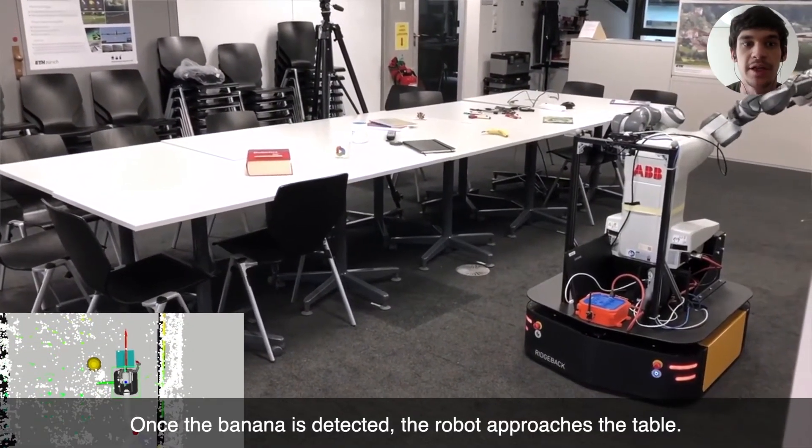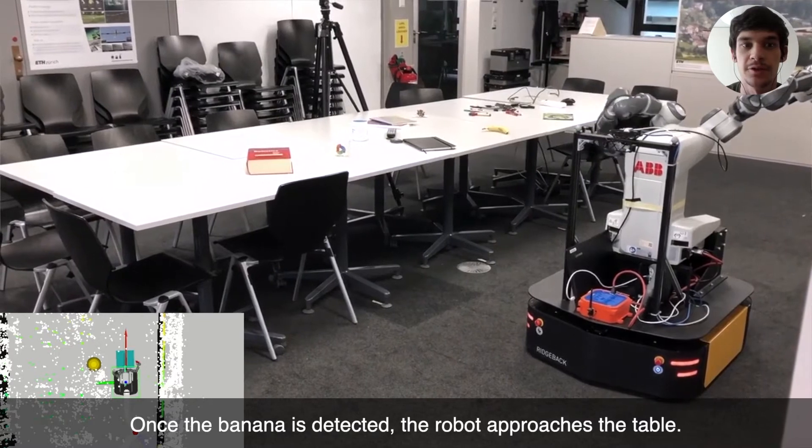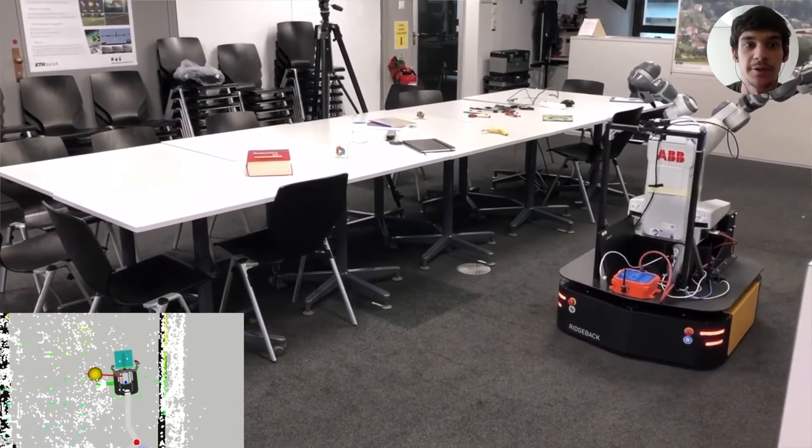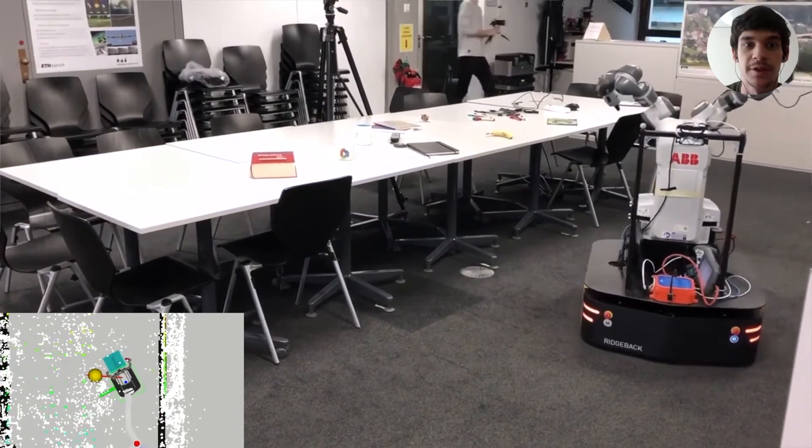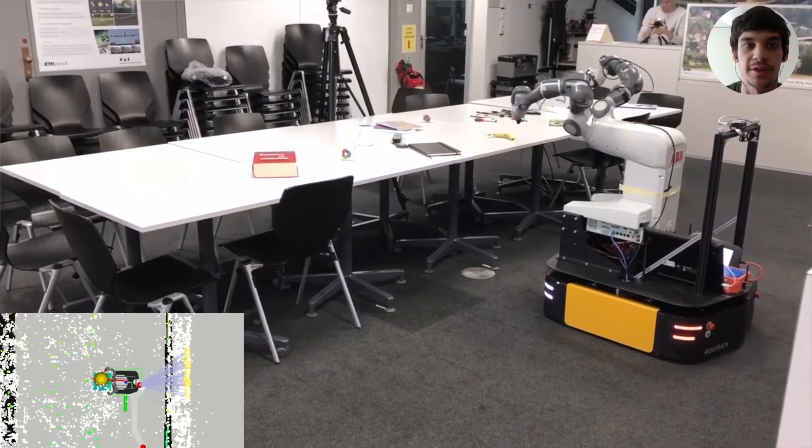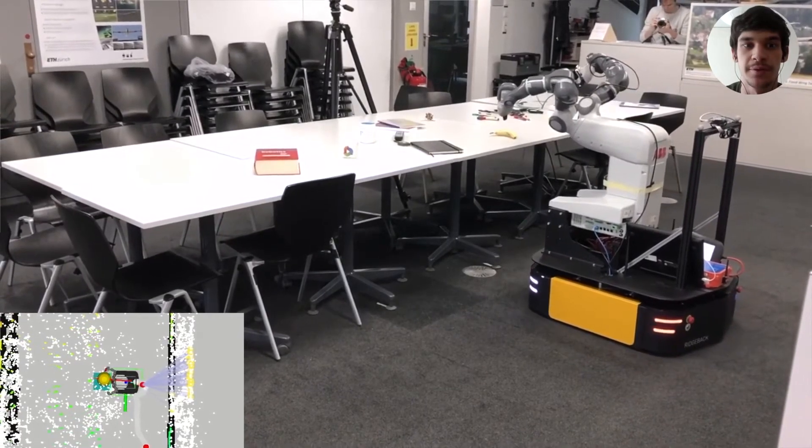A banana, in this example. Once we have the target object position, the robot approaches the table. For this, it changes its arm configuration to avoid collisions with the environment.